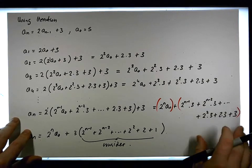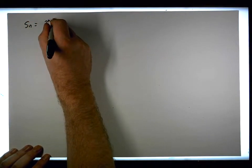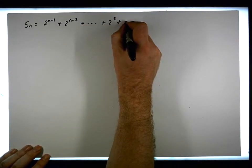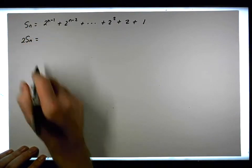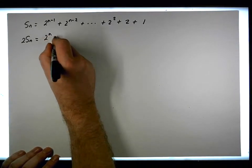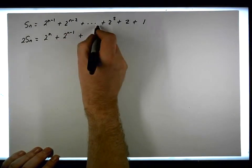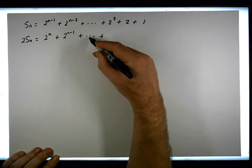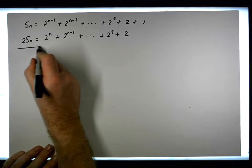Let's consider that summation: S(n) = 2^(n-1) + 2^(n-2) + ... + 2 squared + 2 + 1. Now multiply by 2: 2·S(n) = 2^n + 2^(n-1) + 2^(n-2) + ... + 2 cubed + 2 squared + 2.